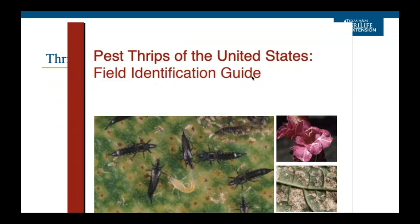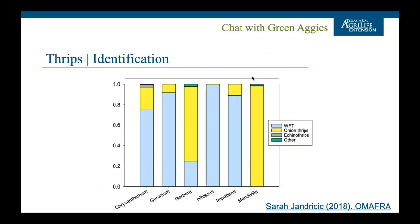If you Google 'Pest Thrips of the United States Field Identification Guide,' you'll find a free PDF — an excellent resource for identifying thrips. Research from a colleague in Canada showed that Western flower thrips is typically the dominant species across many crop types. However, Onion thrips and Chili thrips are more common here in Texas than in Canada. Echinothrips, especially on poinsettias, are also fairly common. We'll go through these key species.